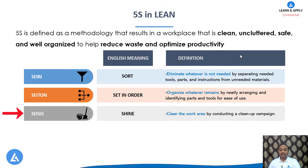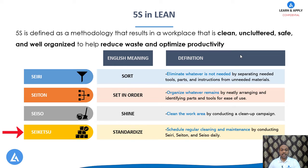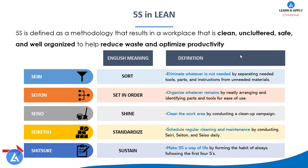The fourth S is Seiketsu; its meaning is Standardize. In this step, we schedule regular cleaning and maintenance by conducting Seiri, Seiton, and Seiso regularly. The last step is Shitsuke, which is about self-discipline, also called Sustain. In this step, we focus on the system to make 5S a way of life, achieved by creating awareness and following all the previous 4S.